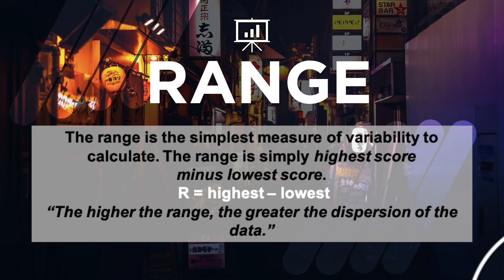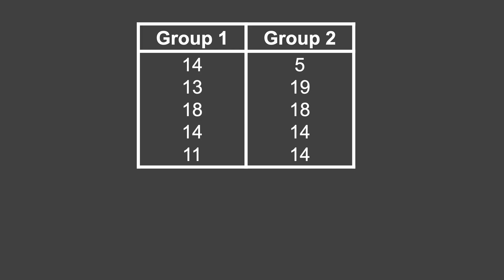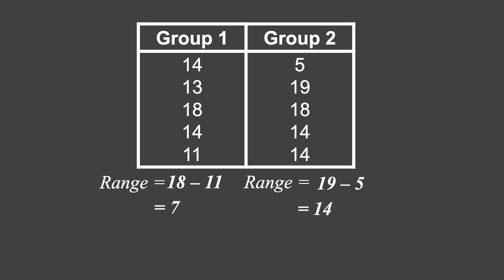Let's use the earlier example of two groups' scores. For group one, the highest is 18 and the lowest is 11. Using the formula, the range is 18 minus 11, which equals 7. For the second group, the highest is 19 and the lowest is 5, so it would be 19 minus 5, which equals 14. In conclusion, group one is more consistent than the second group because the range is lower.